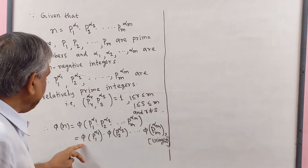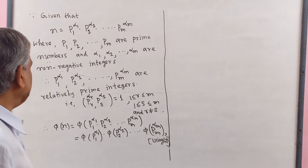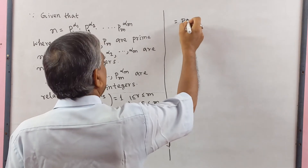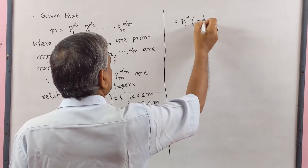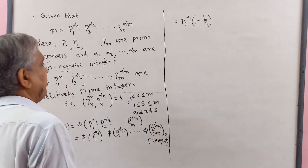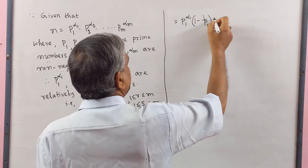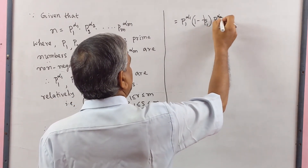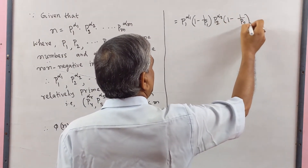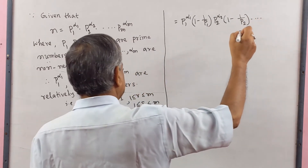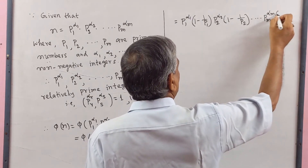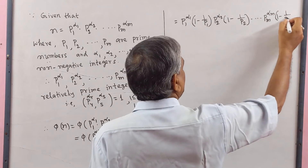We know that phi(P1^alpha1) equal to P1^alpha1 · (1 minus 1/P1), phi(P2^alpha2) equal to P2^alpha2 · (1 minus 1/P2), and dot dot dot phi(Pm^alpha m) equal to Pm^alpha m · (1 minus 1/Pm).